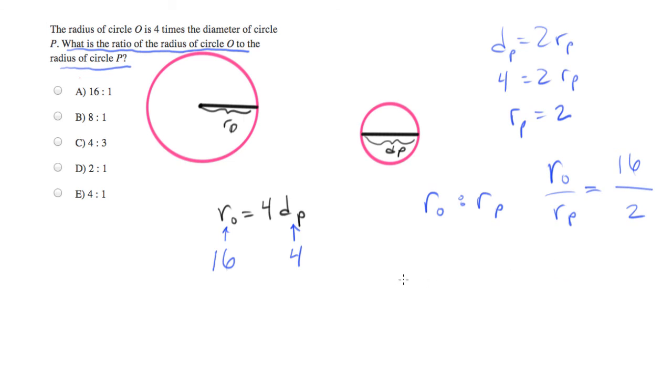So we know the ratio of O to P is 16 to 2. And that fraction can be simplified to 8 over 1, which could be converted back into ratio format of 8 to 1.